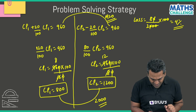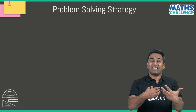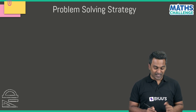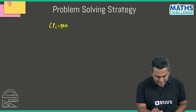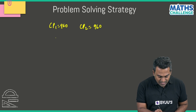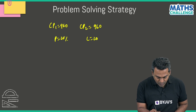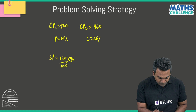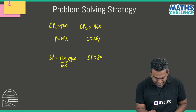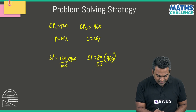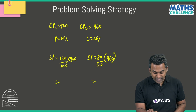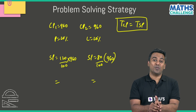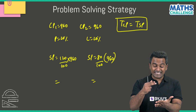Now let me tell you when you will neither make a profit nor a loss. That happens when the cost prices of both items are the same. For example, if the cost price of both the phone and the laptop was $960, with a 20% profit on one and a 20% loss on the other, the selling price would be 120% of 960 and 80% of 960 respectively, and the total cost price and total selling price would be equal — resulting in no profit, no loss.